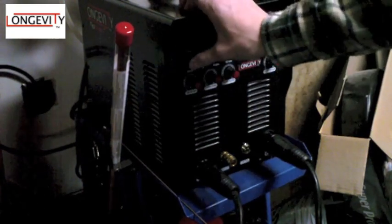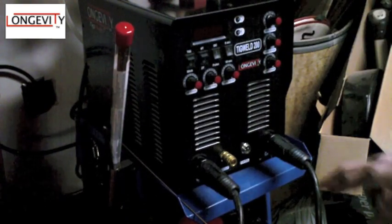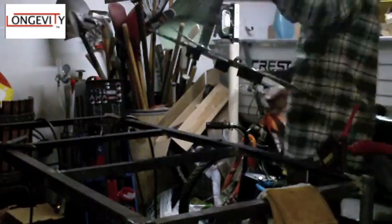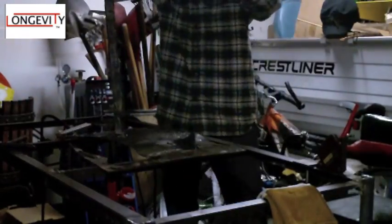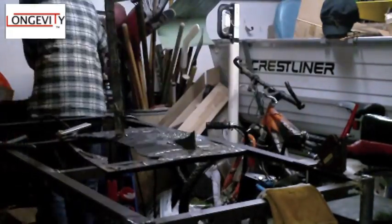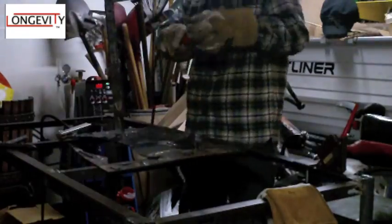Before you'd have it set on TIG like that. So you have it on TIG. Make sure it's DC, 2T. And that's pretty much it. Then you just control your amperage and you're ready to weld there.